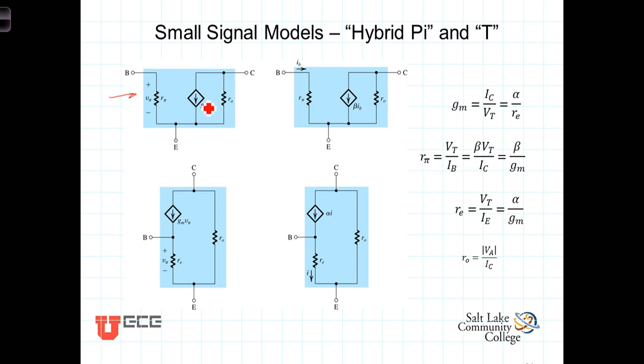The dependent current source, then, has a value equal to the transconductance, G sub m, times the input voltage, V sub pi.